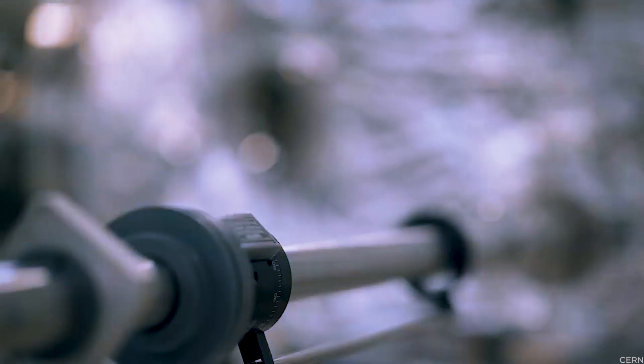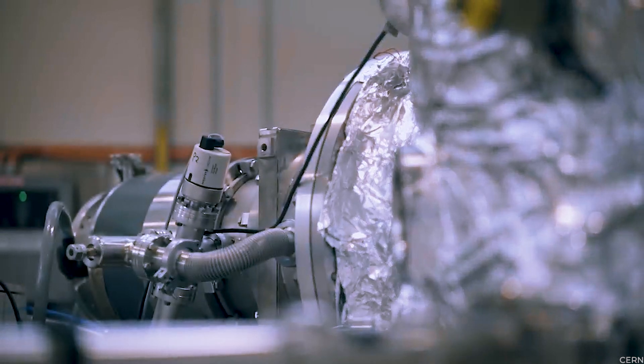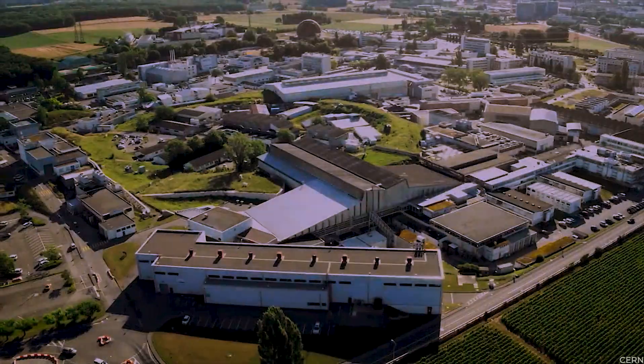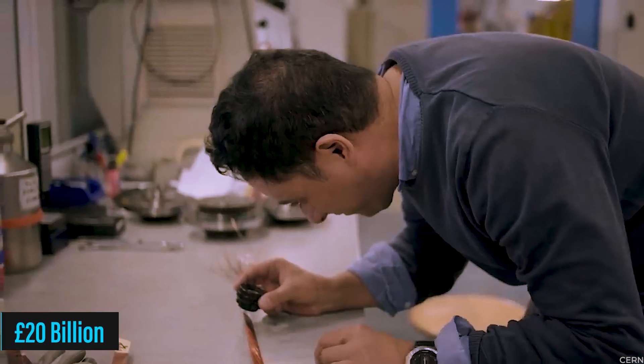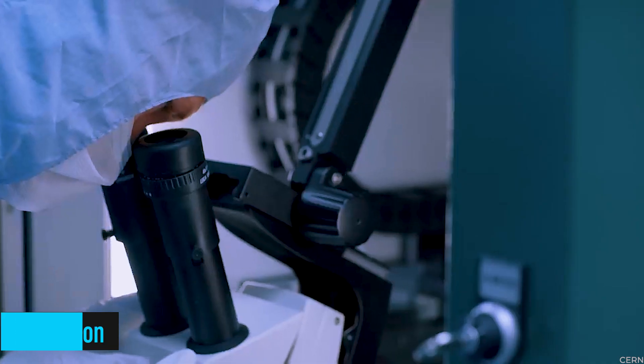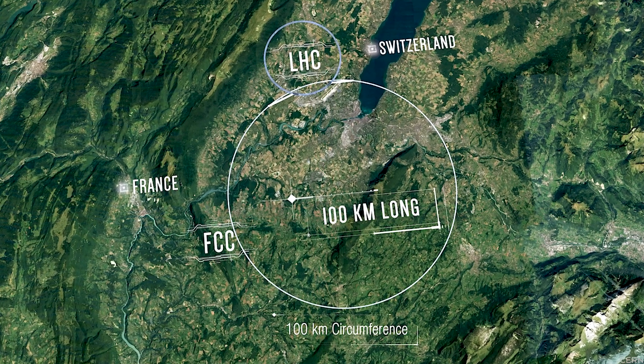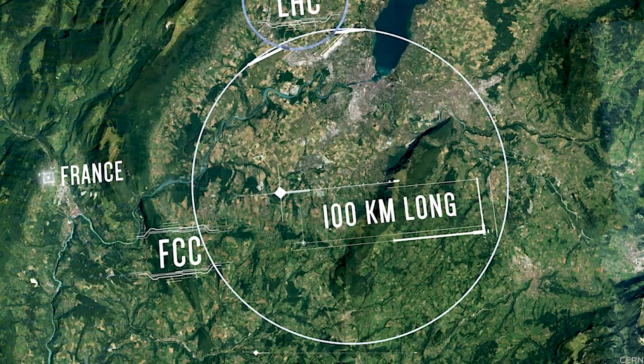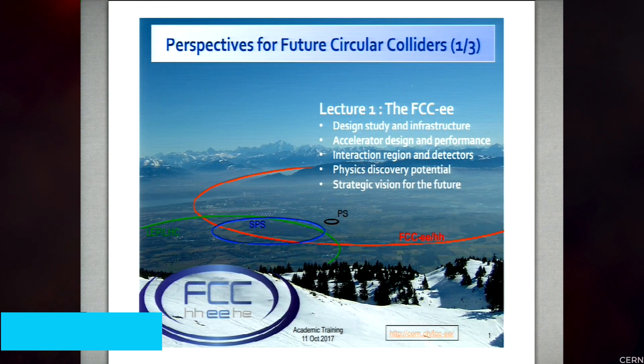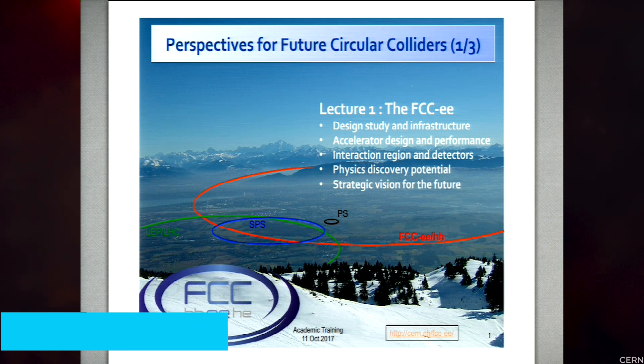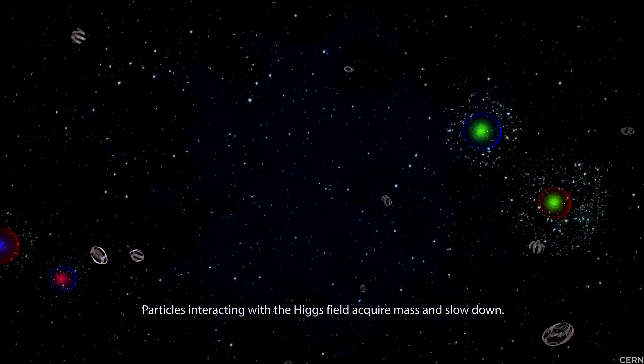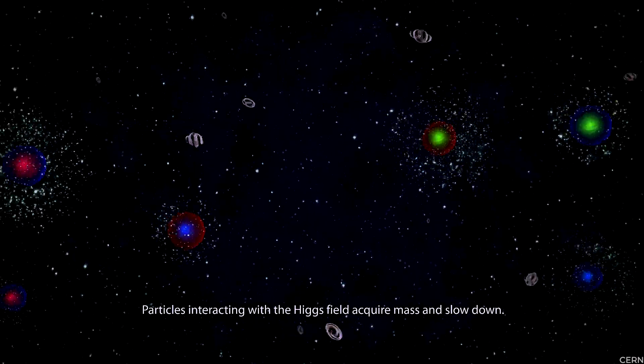A massive particle collider that could surpass even the awe-inspiring Large Hadron Collider at CERN. We're talking about something truly grand here, with a jaw-dropping estimated cost of £20 billion and an underground tunnel spanning a whopping 100 kilometers. Let's break it down. The first phase of the FCC, known as the FCCEE, would zoom in on the Higgs particle, giving us an unprecedented level of precision in its study.